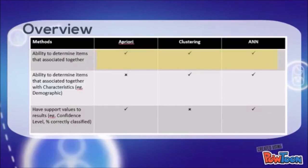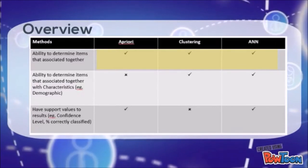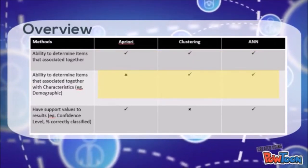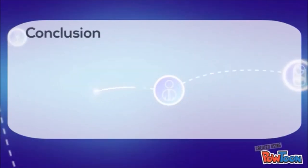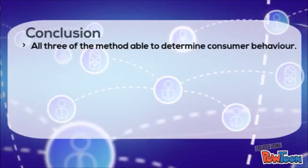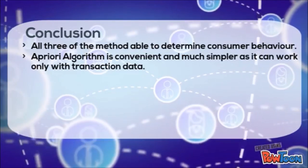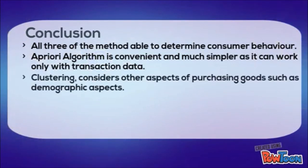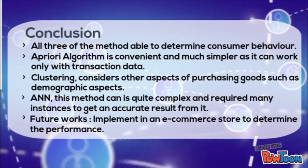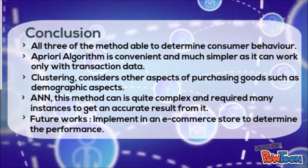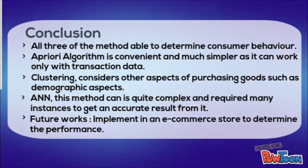In order to overcome that, possible solutions include adding noise to the weights or increasing the weight adjustment rate by using momentum. All three methods can indeed generate results from consumer data that can be used to better understand consumer behavior. However, A-priori is unable to determine items associated together based on characteristics such as demographics. In conclusion, all three methods are able to determine consumer behavior: A-priori is convenient and simpler as it works only with transaction data, clustering considers other aspects such as demographic data, and ANN is quite complex and requires many instances for accurate results. For future works, the methods will be implemented in an e-commerce store to determine their performance over a certain period of time.